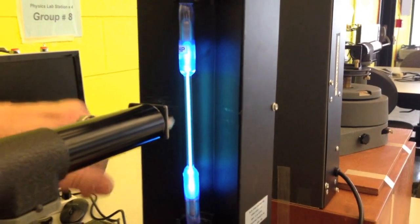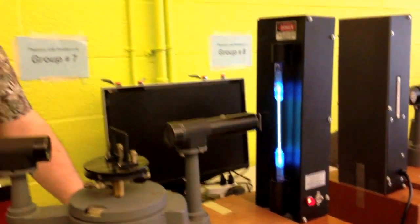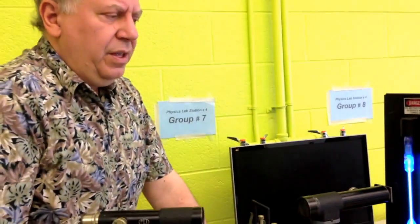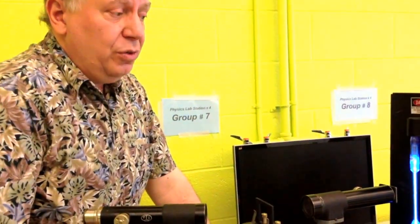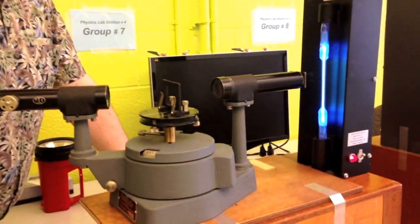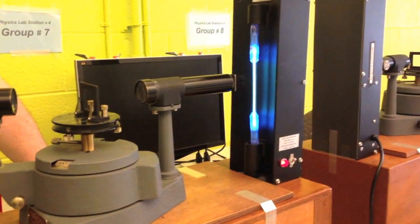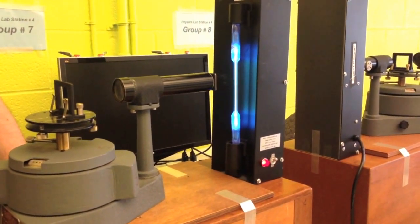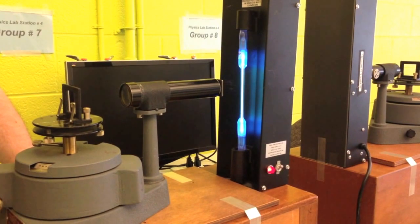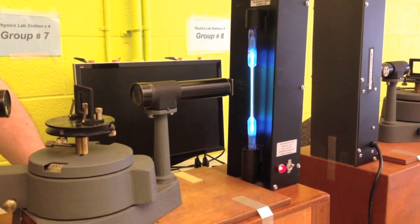This bluish light that you see right now is a mixture of colors. In order to determine what the gas is in this discharge tube, we are going to look at the colors, individual colors, the spectral lines that are produced by this mixture of colors, this gas.